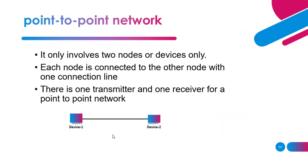Next we have the point-to-point network. A point-to-point network is a network that involves only two devices — only two nodes. There shall be no third device. Each node is connected with another node via one connection line, so there is one transmitter that sends data and the other is a receiver that receives data.